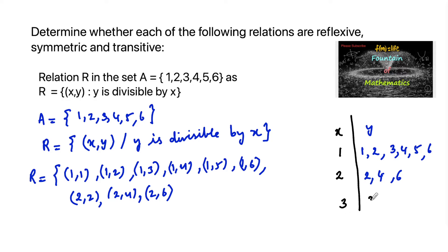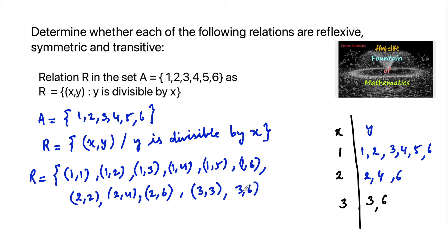For x = 3: 3 is divisible by 3 and 6 is divisible by 3. The possible ordered pairs are (3,3) and (3,6).